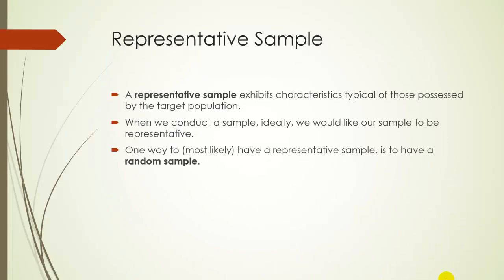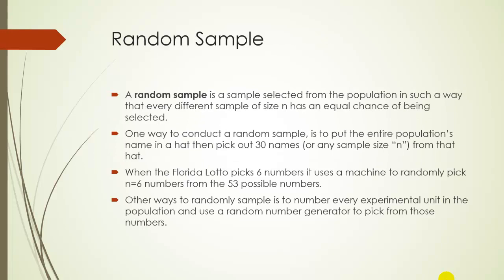When we try to make a sample, we want that sample to be representative — meaning it exhibits similar characteristics to those typical of the target population. One way to most likely produce a representative sample is to conduct a random sample. A random sample is a sample selected from the population such that every different sample of size n has an equal chance of being selected.